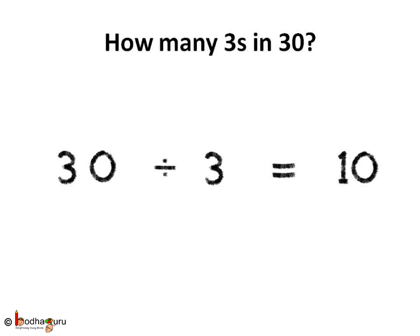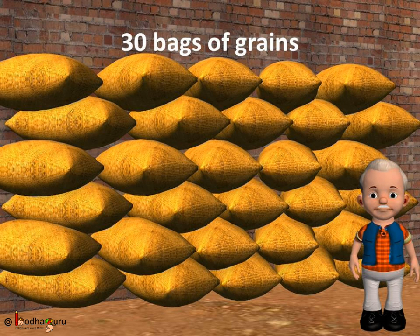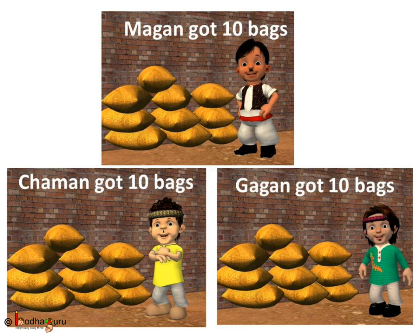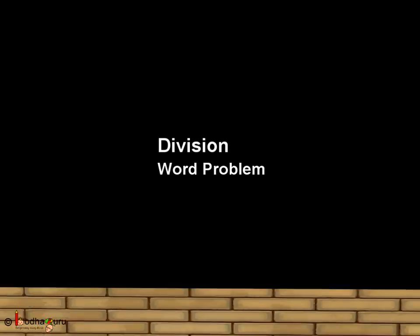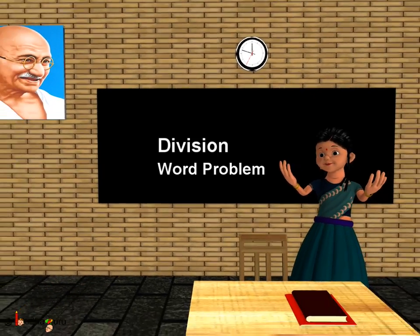So, each brother should get 10 bags for equal share. And this is what the father did. Each brother got 10 bags of grains. So, the division was fair. See, now you can solve problems using division method. Bye-bye children!